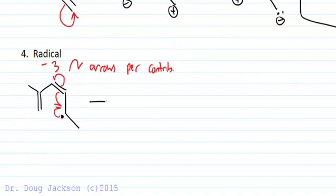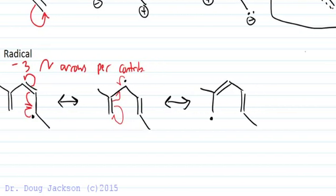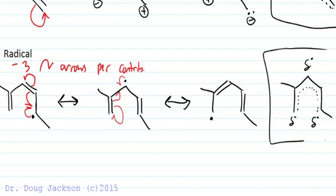Atoms don't move. That pi bond wasn't involved. There's our radical. We form the pi bond here. Three arrows per contributor. Three half arrows. Meet in the middle. One left over again. We're at the end of the line. Our hybrid structure is going to look like this with a partial radical everywhere we had a radical in a contributor. So the hybrid's what's actually there.